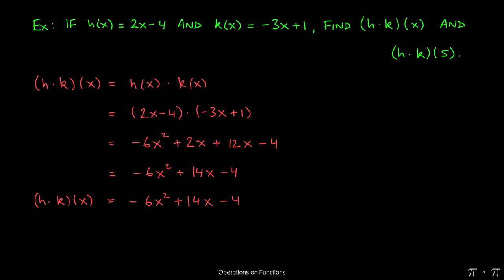So this tells us what (h ⋅ k)(x) would be. It would be -6x² + 14x - 4.